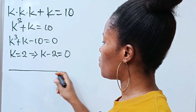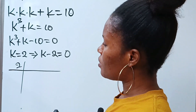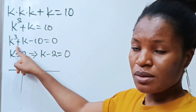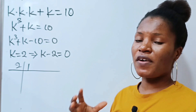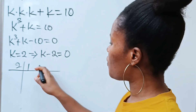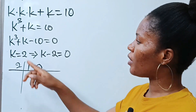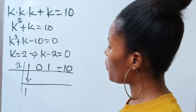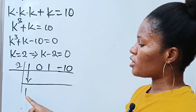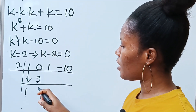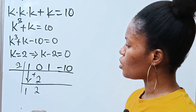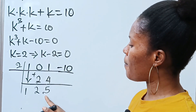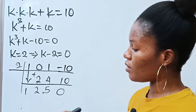For synthetic division, draw your line and use the root 2. For k to the power of 3 the coefficient is 1. Since there's no k squared term, its coefficient is 0. The coefficient of k is 1, and the constant is minus 10. Bring down the 1; then 2 times 1 gives 2; 0 plus 2 gives 2; 2 times 2 gives 4; 1 plus 4 gives 5; 2 times 5 gives 10; minus 10 plus 10 gives 0.